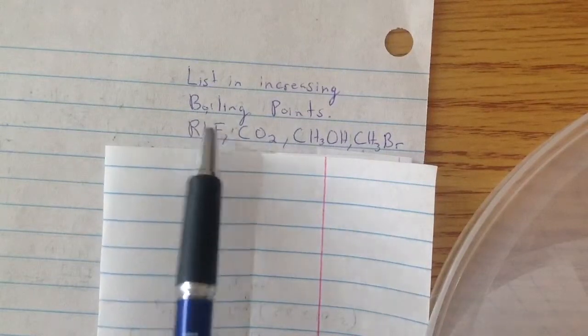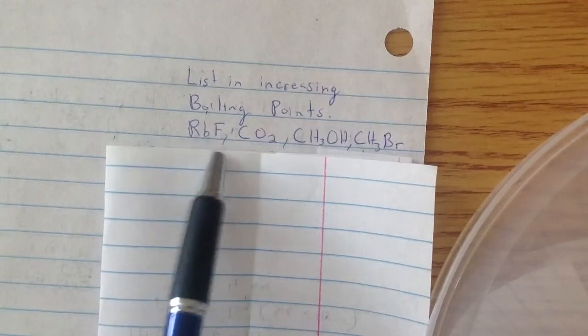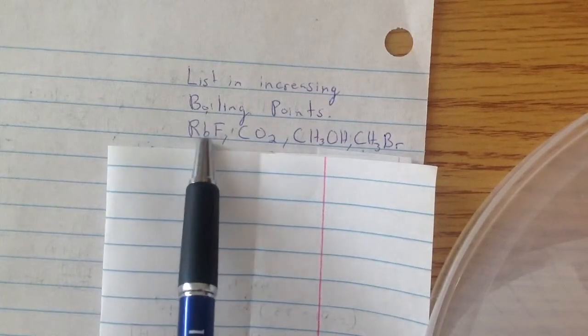So RBF, see that RB is a metal and this is a non-metal. So this is going to be an ionic bond. So this is going to have ion-ion forces.